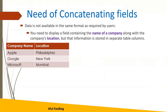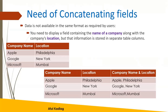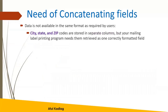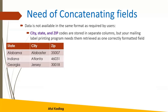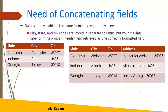Here is an example where we have two columns — company name and location — that we want to combine as a third column. We want to display them comma-separated, combining two values as needed by the business. Another example is city, state, and zip codes, where we want to combine these three fields into a single field that can be used as a mailing or printing address. When we use the CONCAT operator or CONCAT function, we can combine these three values into a single column.